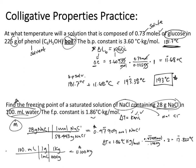Since this is freezing point depression, we subtract delta T from the freezing point of water: 0 − 17.822 = −17 °C, which is the freezing point of the salt solution. The calculations for boiling point elevation and freezing point depression are similar in approach — just make sure you're using the correct constant for each. Use the freezing point constant for freezing point calculations and the boiling point constant for boiling point calculations.